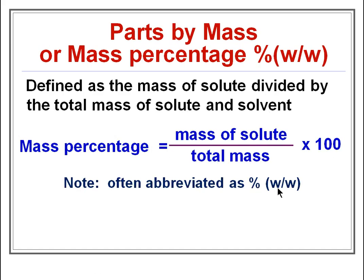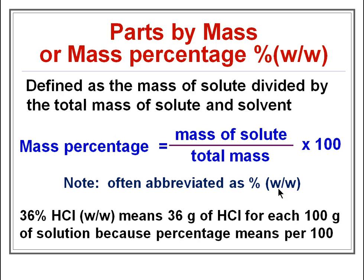The abbreviation is percentage weight by weight, or mass by mass. For example, if we say 36% HCl weight by weight, it means 36 grams of HCl for each 100 grams of solution, because percentage means per hundred. So 36 grams of HCl will be present in 100 grams of solution. Remember this formula: mass percentage equals mass of solute divided by total mass, multiplied by 100.